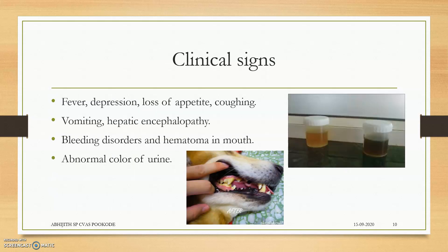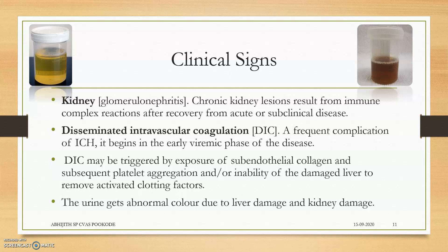Clinical signs: fever due to viremia; depression due to neuronal manifestations; loss of appetite due to liver problems; coughing due to lung problems; vomiting; and hepatic endotheliopathy, mainly due to liver problems. Bleeding disorders, hematomina of the mouth, and abnormal color of urine are also seen — this will be the normal urine color from a healthy dog, and this abnormal urine contains virus — viruria — due to problems caused in the glomerulus.